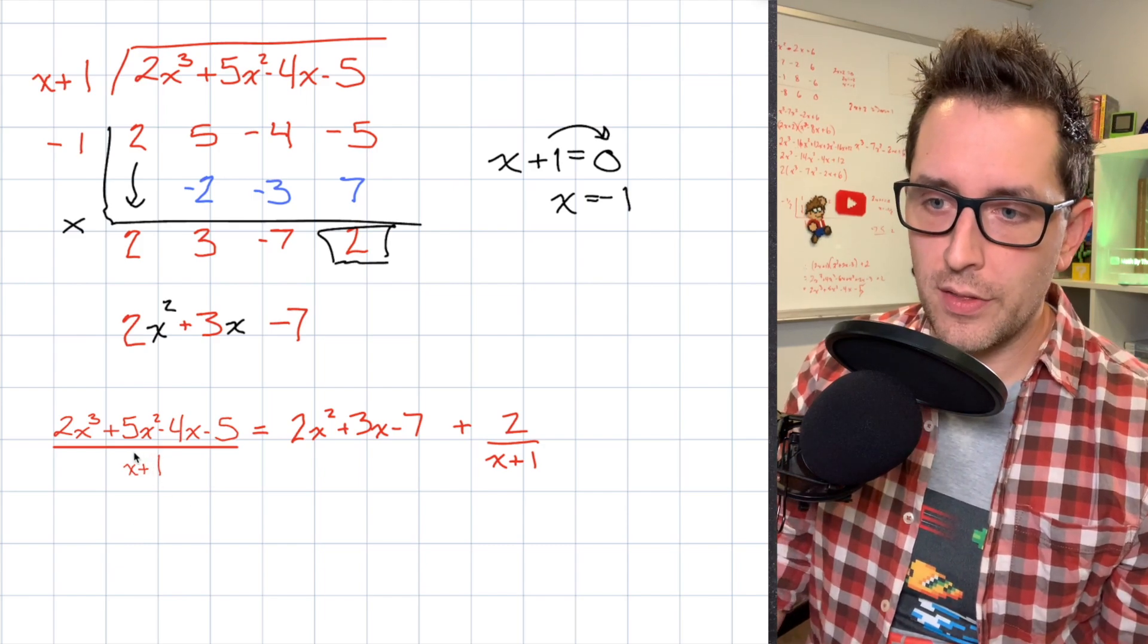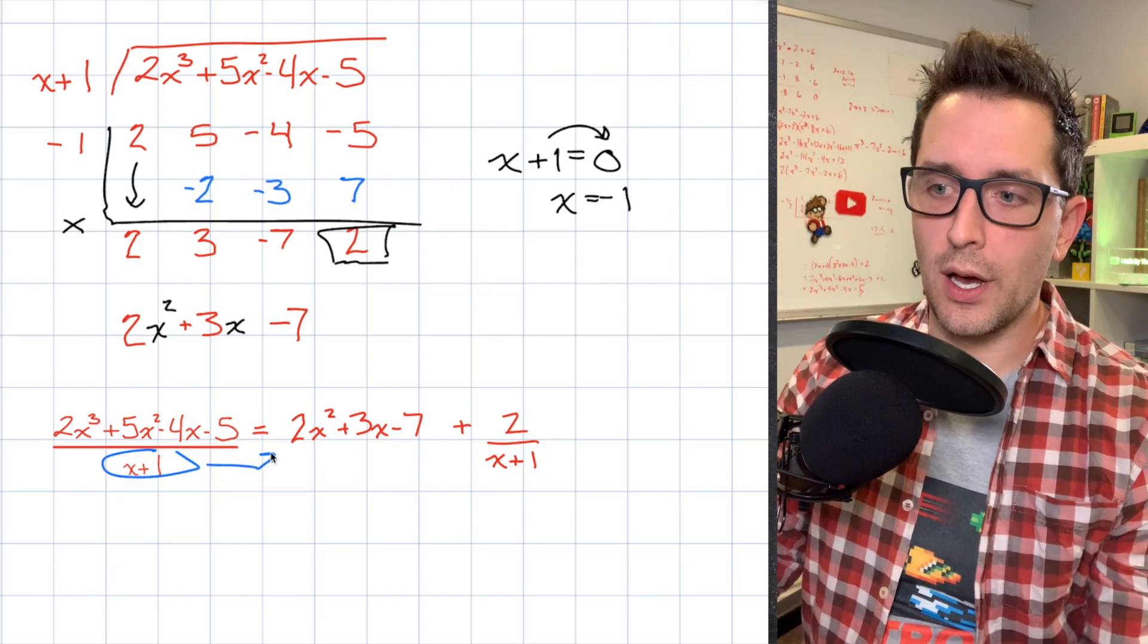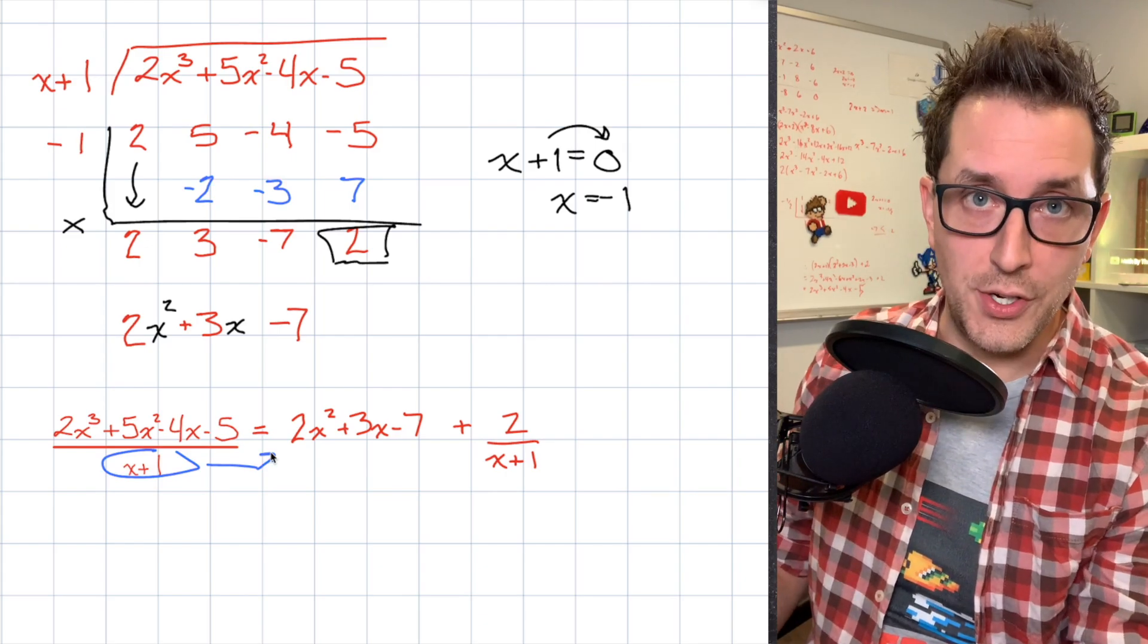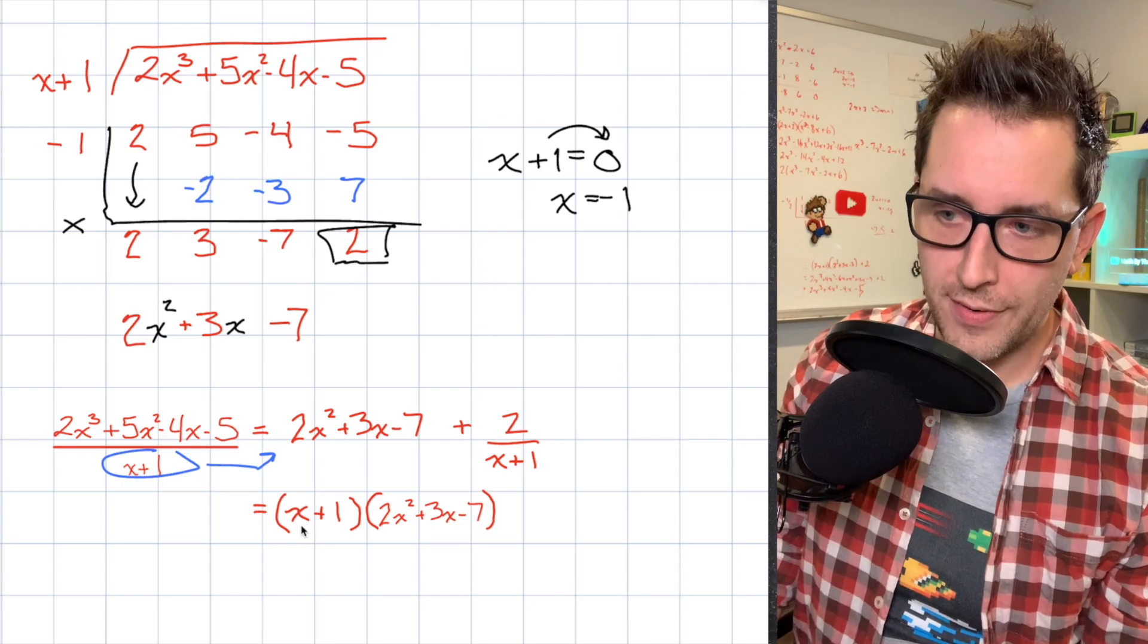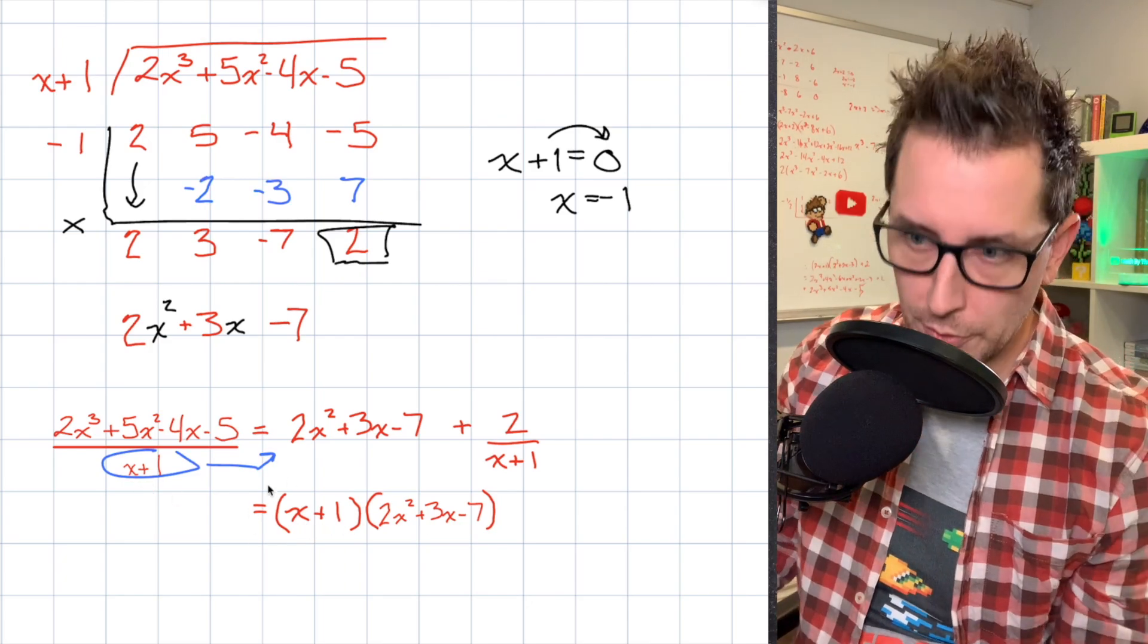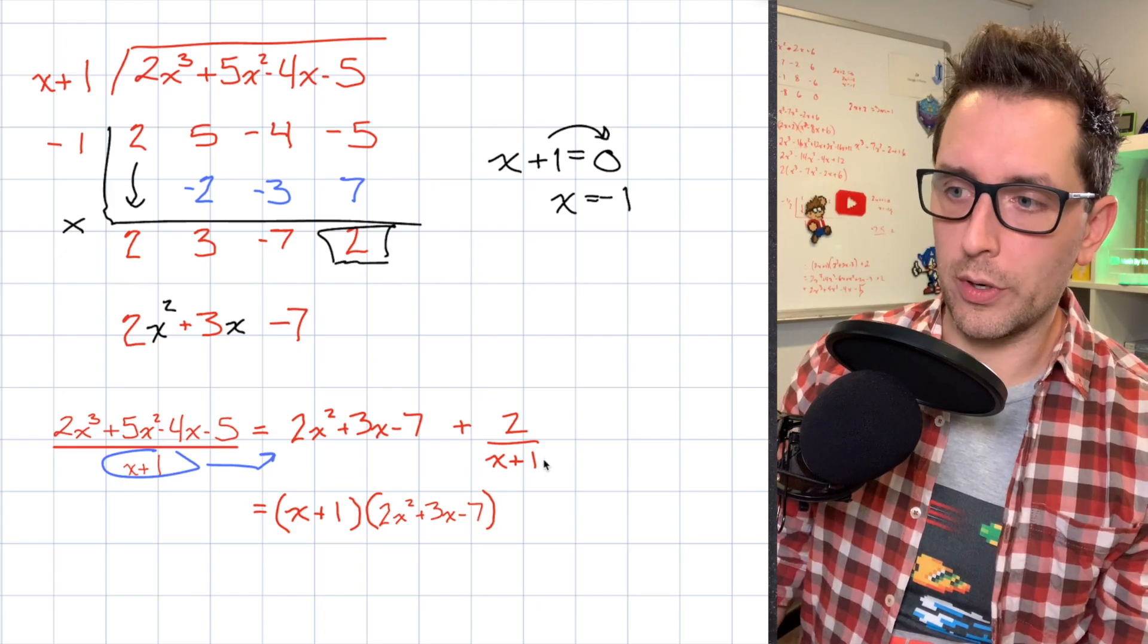Imagine for a second that I took this divisor of x plus 1 and I multiplied it up to the other side of the equation, the right side of the equation. Now what you would see happening here is we would have that original trinomial with our divisor of x plus 1 multiplied since we multiplied it up to the other side. Okay, but what's going to happen to this awkward term at the end here?